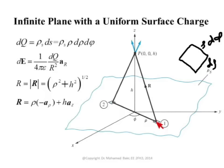Now, what about the unit vector? In cylindrical coordinates, this unit vector has two components. I can decompose it into a vector in the minus Ru direction and a vector in the plus Z direction. The vector in the Ru direction is minus Ru â_Ru, and the vector along the Z direction is equal to H â_Z. Remember, H is a constant — the height of the observation point.